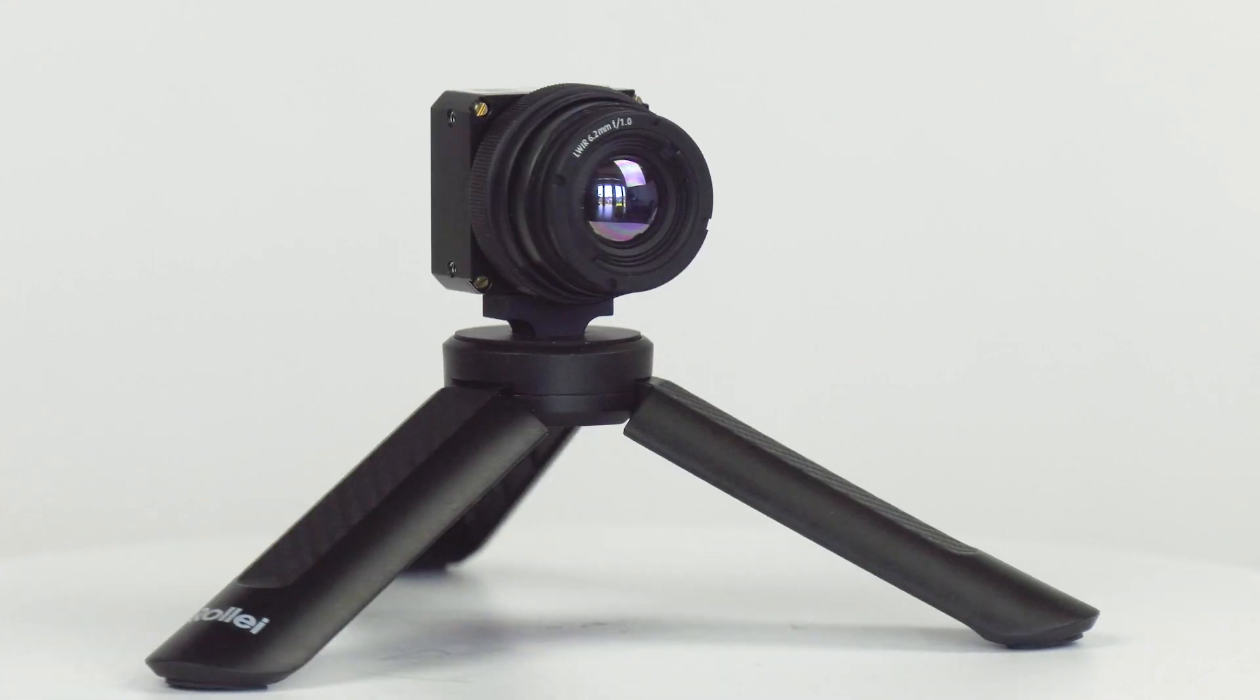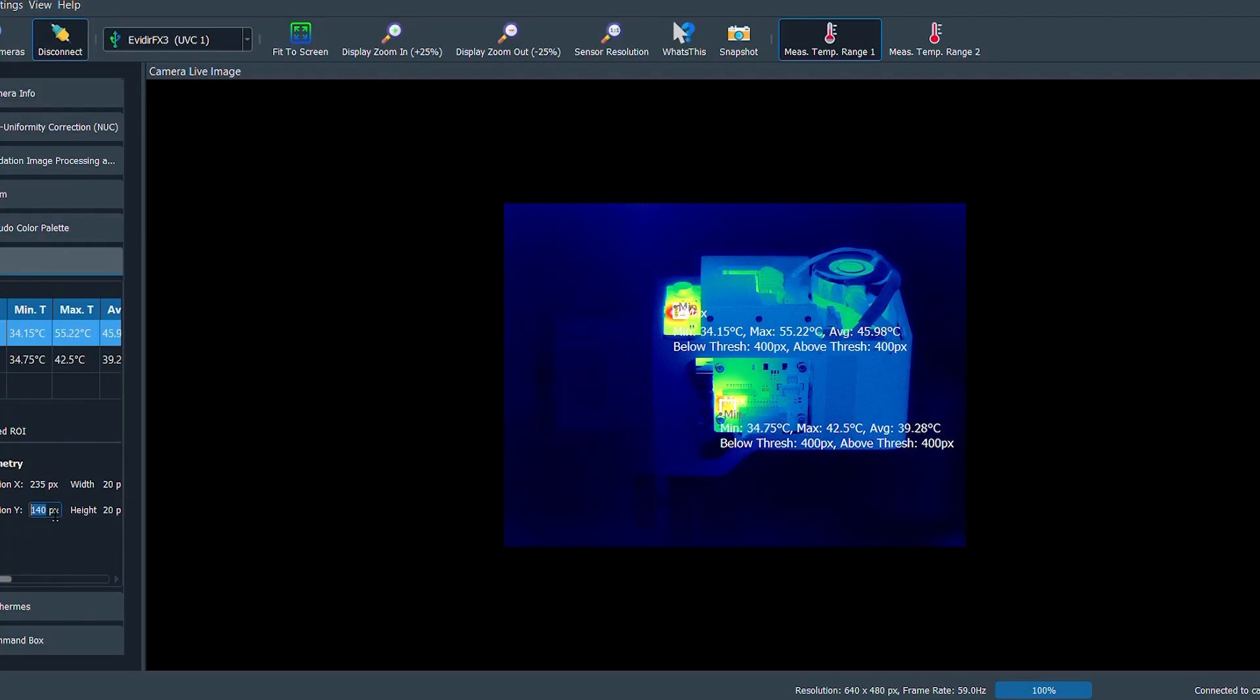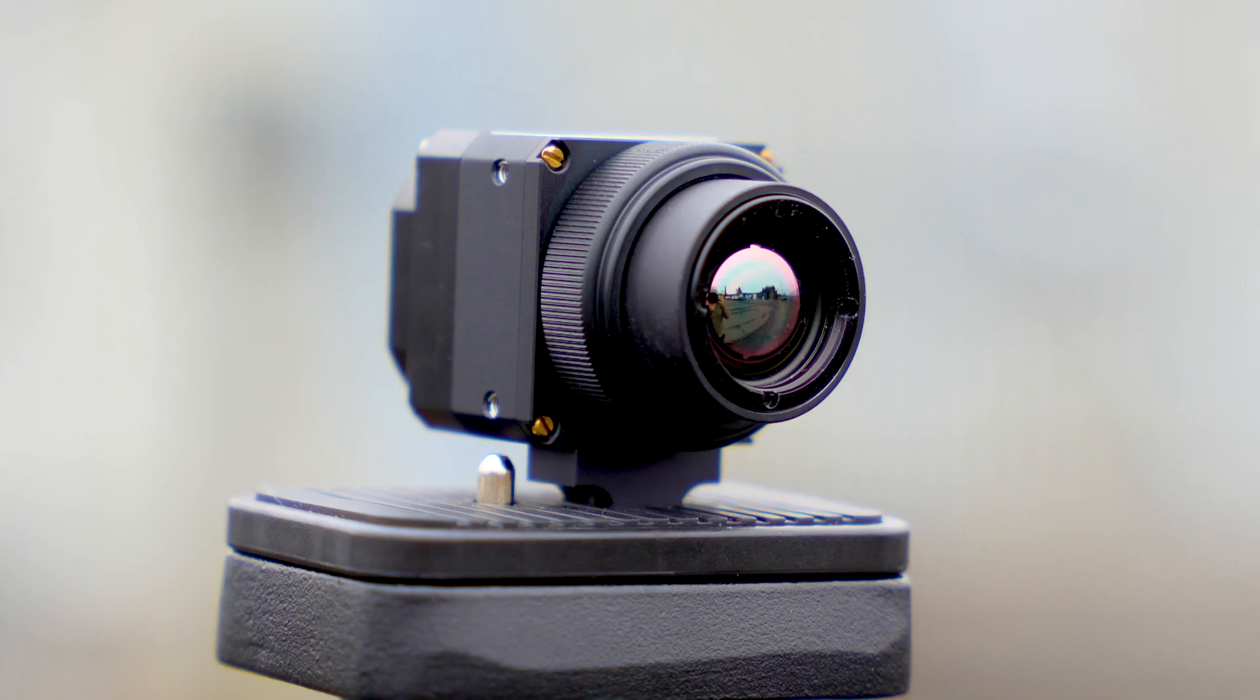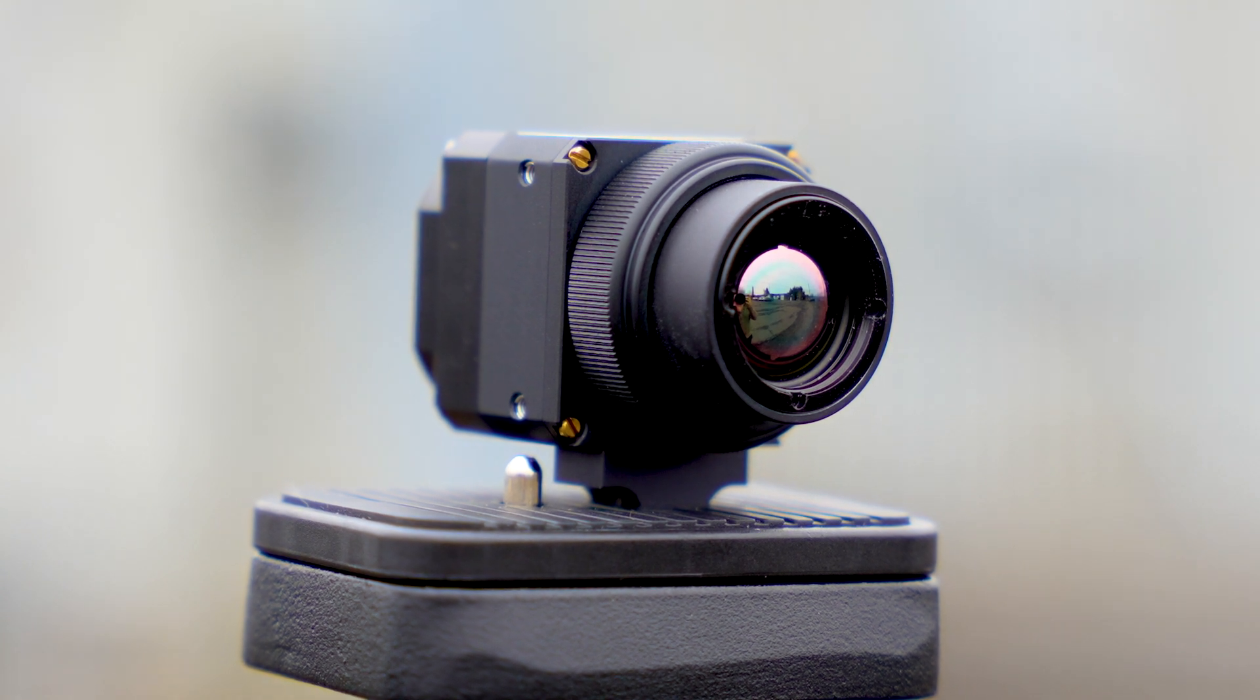First of all, these kind of cameras measure either photons from a surface or watts from a surface. This particular camera measures watts from a surface.